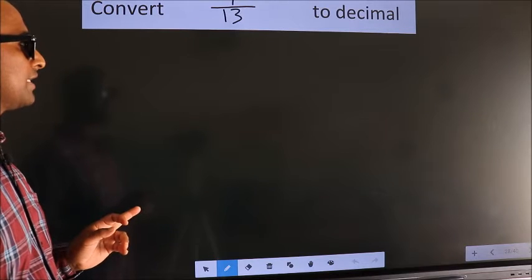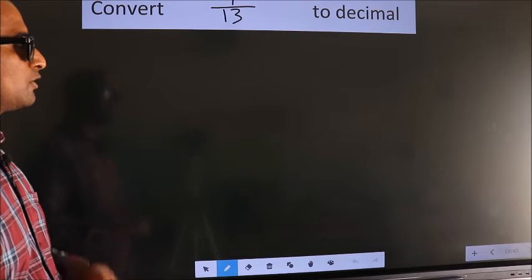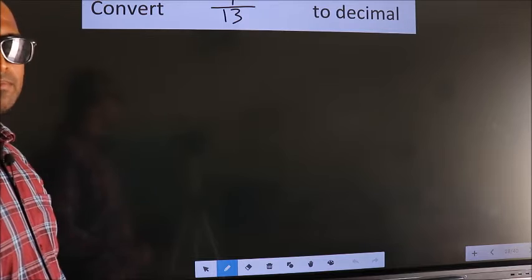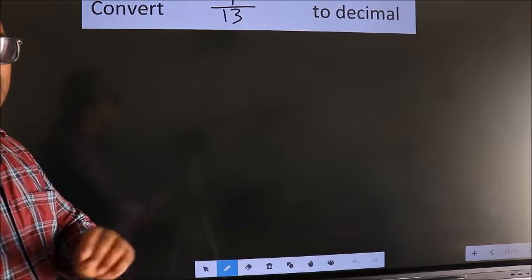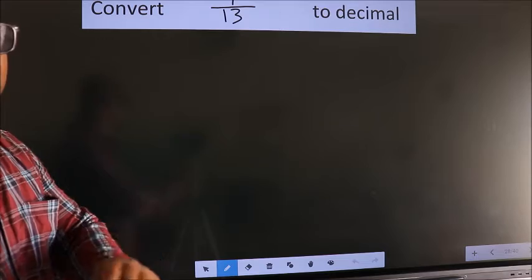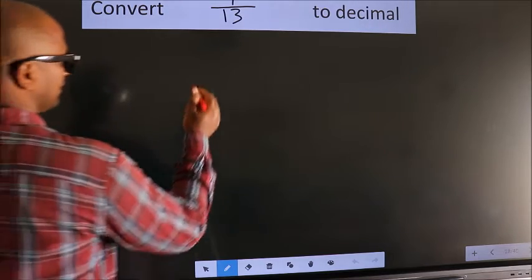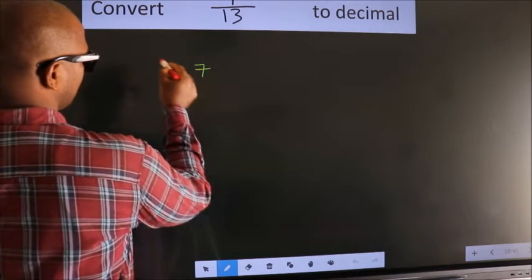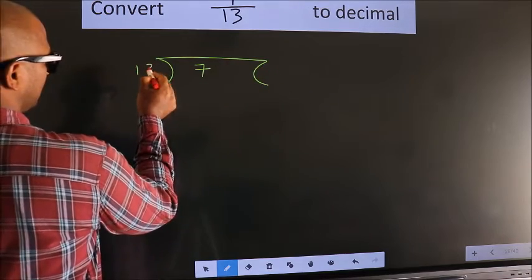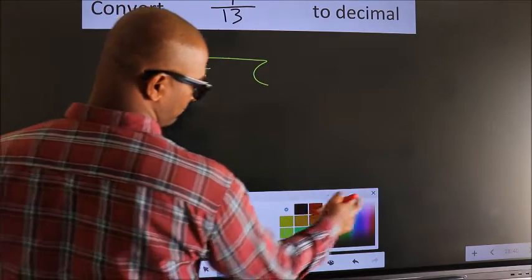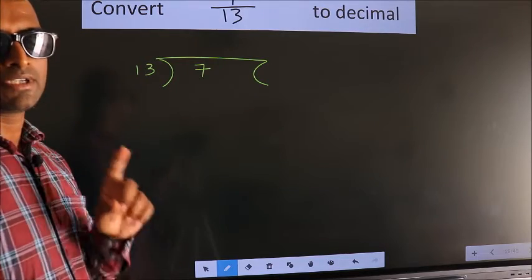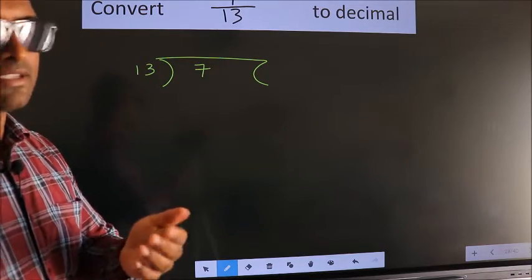Convert 7 by 13 to decimal. To convert this to decimal, we have to divide. And to divide, we should frame it in this way — 7 here, 13 here. This is your step 1.